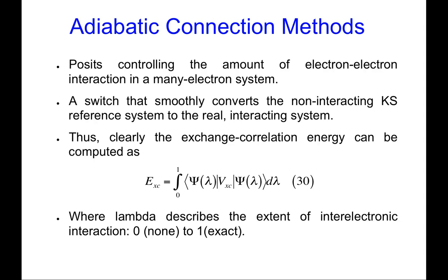So what's adiabatic connection? Well, adiabatic connection models are developed by thinking about turning on the electron-electron interaction in the Kohn-Sham formalism. We begin with a non-interacting system and think about a smooth way to convert to the fully interacting system. When lambda is zero, we have no inter-electronic interaction. When lambda reaches one, we've got the exact system.